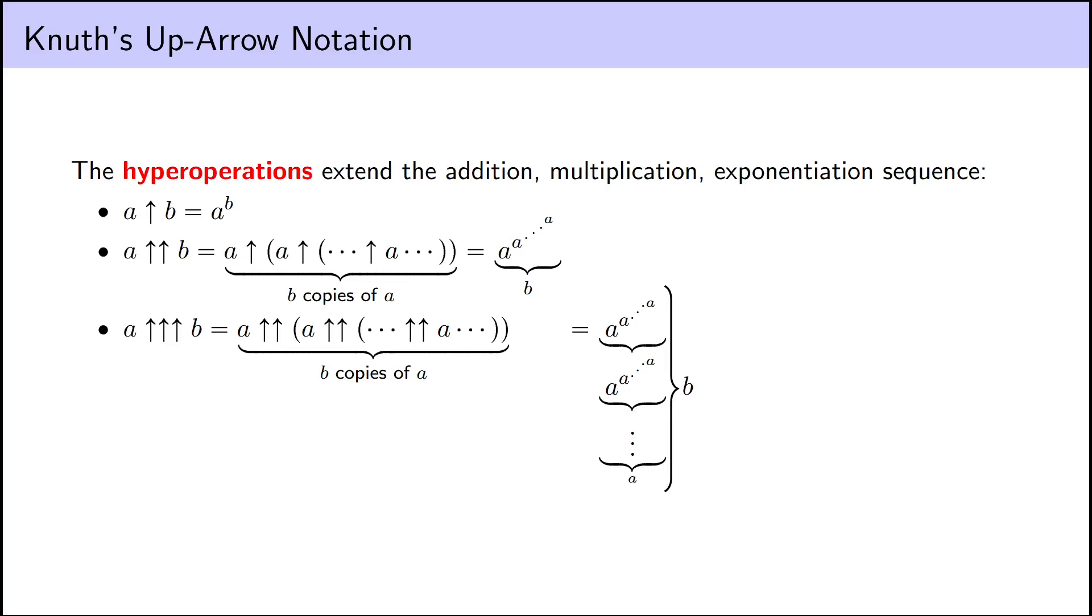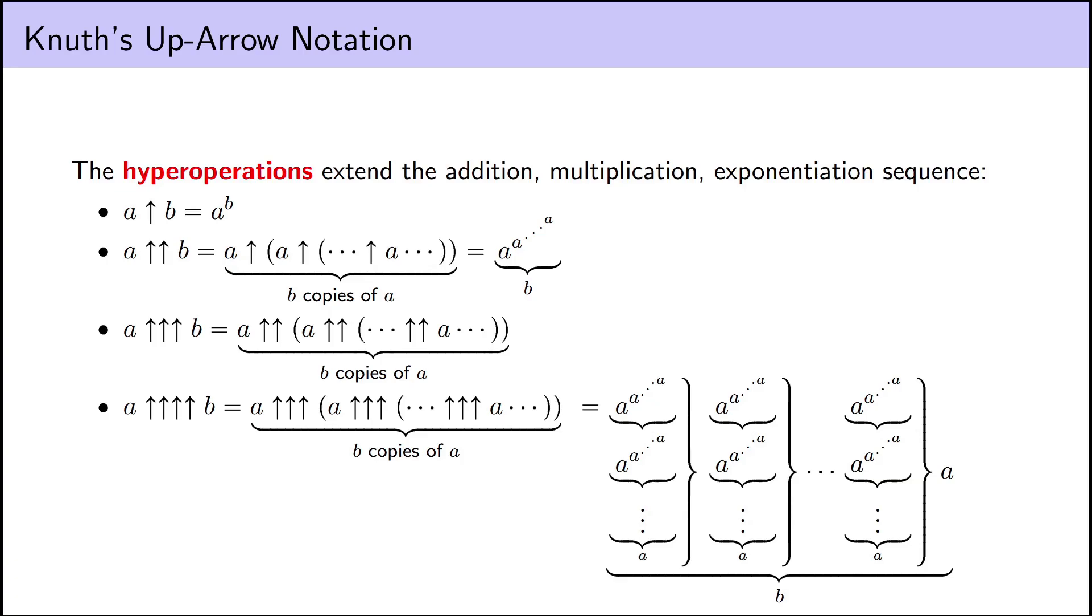Then we define a triple arrow b as b copies of a double arrowed together. Again, this will be primitive recursive because we just showed that the double arrow operation is primitive recursive. And we can define the triple arrow operation by primitive recursion in terms of the double arrow operation. And then we define a quadruple arrow b similarly and so on and so forth. All of these specific functions can be defined in terms of the previous using primitive recursion, and so all of these specific functions are going to be primitive recursive.